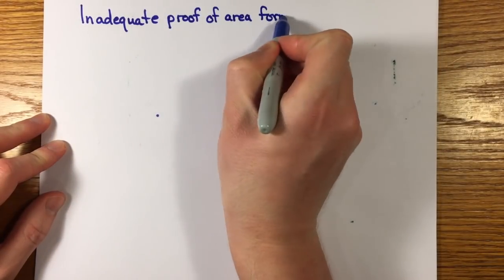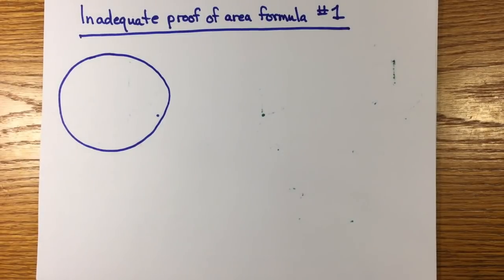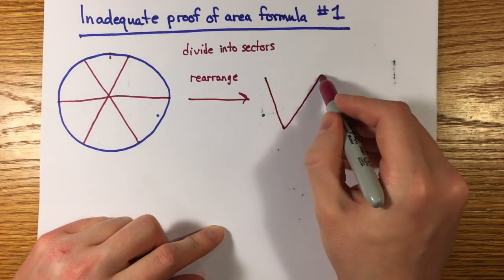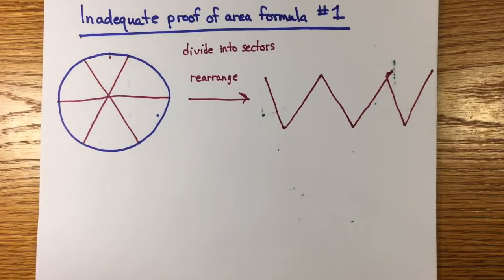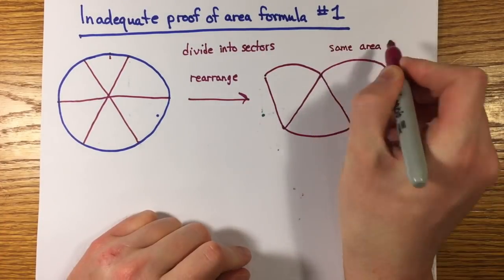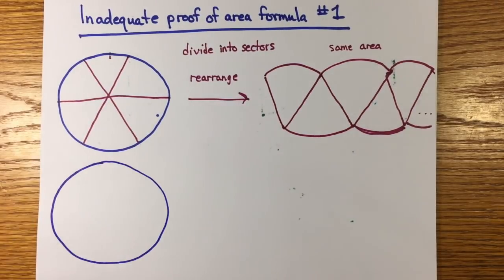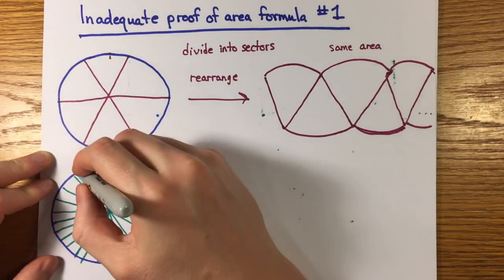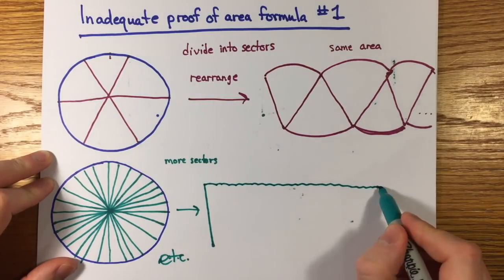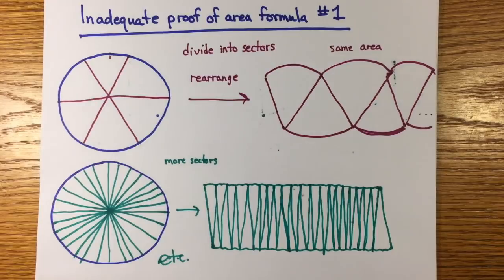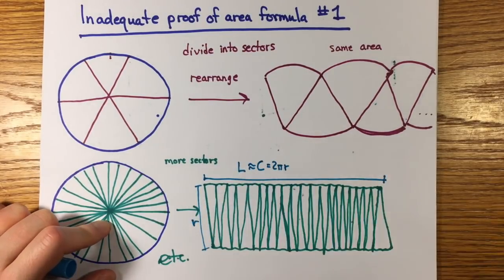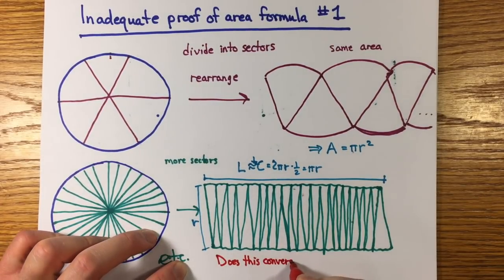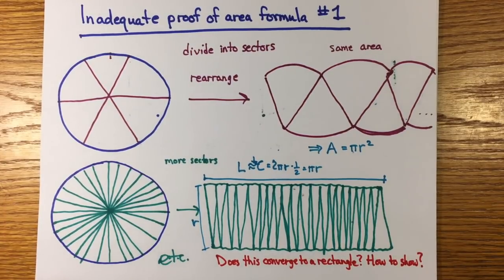I want to make some comment about some popular proofs you might see in school or elsewhere on YouTube. Here's inadequate proof number one. Divide the circle into sectors like slices of a pizza, then rearrange the slices to alternate facing up or down to make another shape with the same area. Unfortunately, I ran out of room here, but you get the idea. As the circle is divided more times and the slices are thinner, the shape they rearrange into looks more and more like a rectangle of height r and width one-half c, since half the sectors point in either direction and the arcs of all sectors have length c. It's very suggestive, but it's tricky to work out what it actually means for the shape to converge to a rectangle.